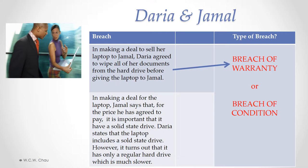The second breach of contract example involves the situation where, in making the deal for the laptop, Jamal says that for the price he's agreed to pay, it's important to him that the laptop have a solid state drive. Daria states that the laptop indeed includes a solid state drive. However, it then turns out that it only has a regular hard drive, which is much slower. In that example, that breach of contract would likely be considered a breach of condition.